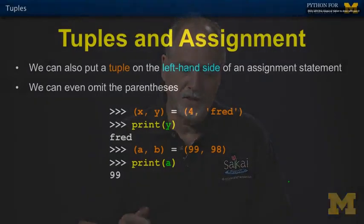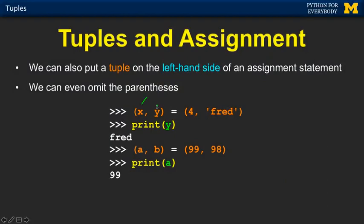Now, there are a couple of interesting things we can do with tuples. One is you can put a tuple on the right-hand side of an assignment statement, and they both have to be variables in this case. That's very different than putting a tuple on the left-hand side. If I put it on the left-hand side of x and y, it would be like x is 4 and y is 6, and that's a 4, 6 tuple. But if we put it on the right-hand side, it expects a tuple on the left-hand side.